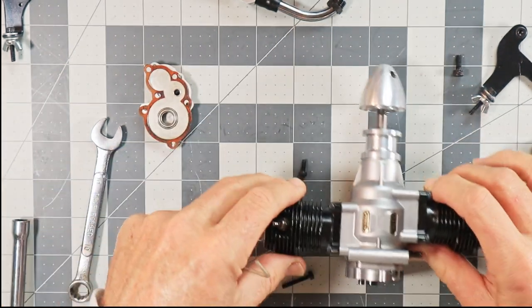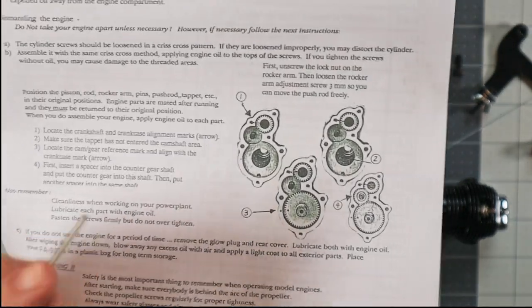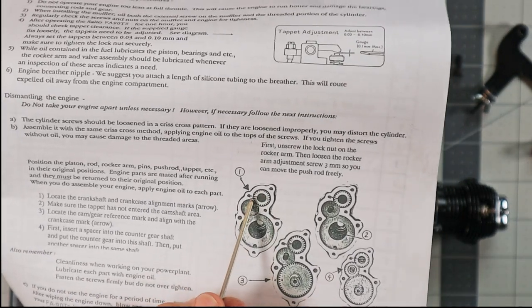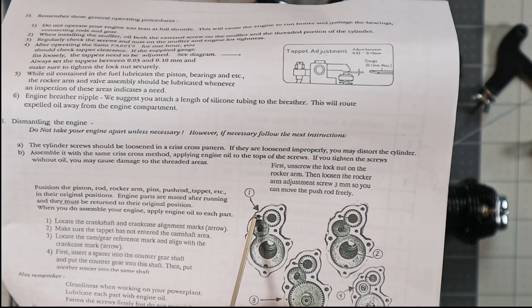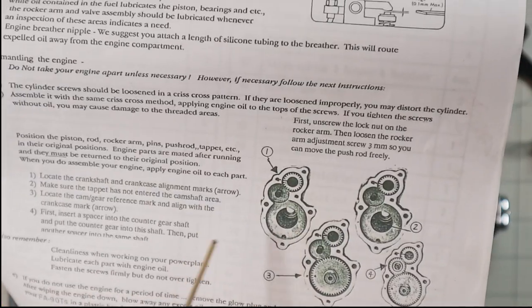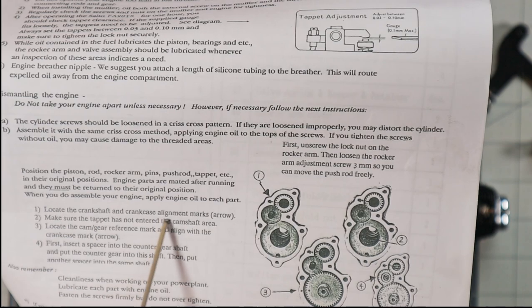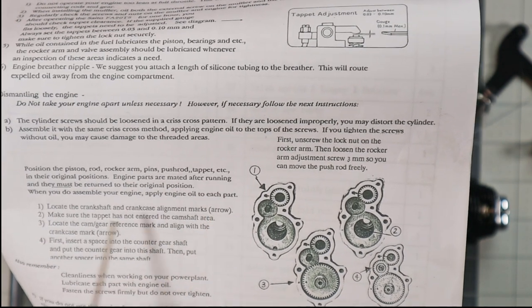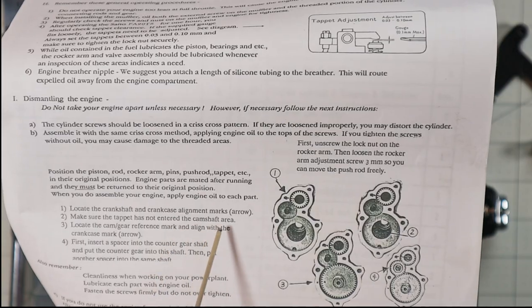So according to these instructions, number one says there'll be a mark on this gear that should line up with this. There's a mark on this portion of the case too. And then it says here locate the crankshaft and crankcase alignment marks arrow. So I've got them located there and then it says make sure tappet has not entered camshaft area.